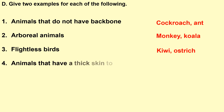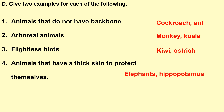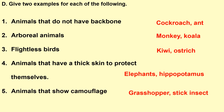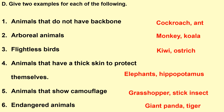Animals that have a thick skin to protect themselves — examples: elephants, hippopotamus. Animals that show camouflage — example: grasshopper, stick insect. Endangered animals — examples: giant panda, tiger.